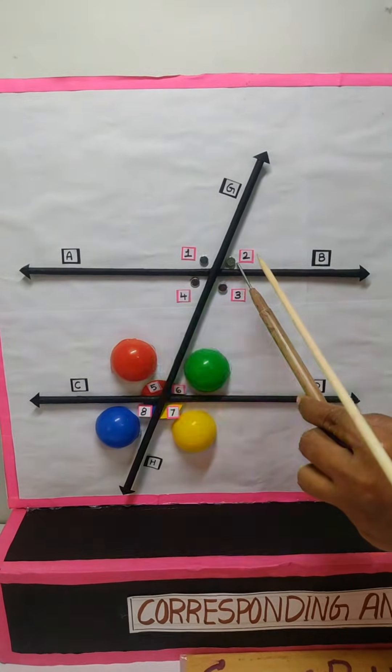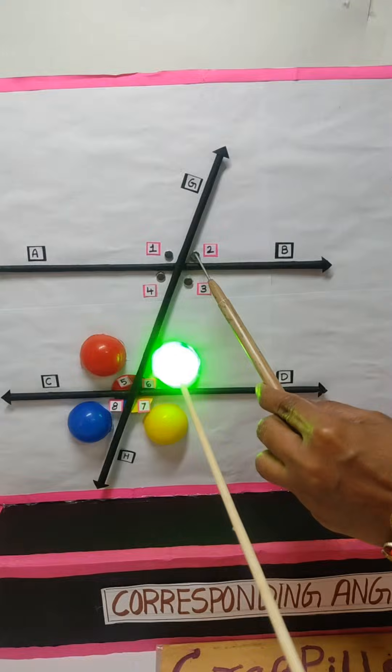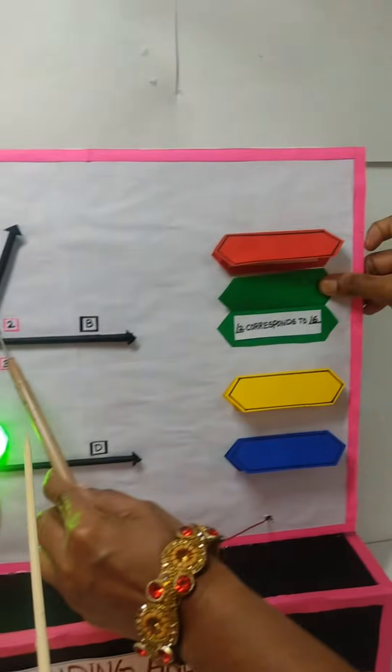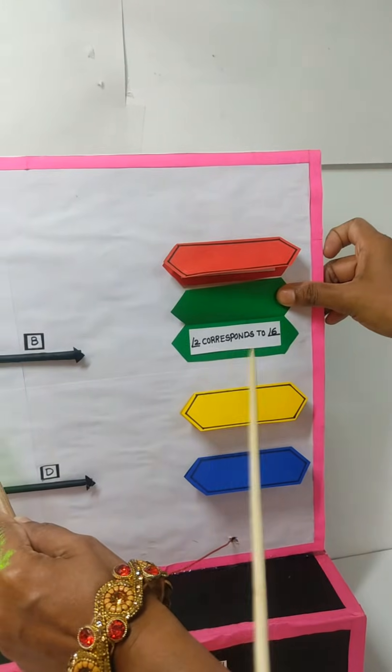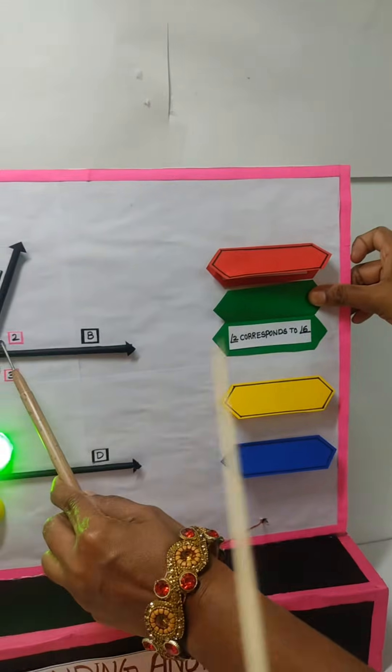Similarly, if we touch angle two, then appropriate six light is glowing and appropriate message we have written here.